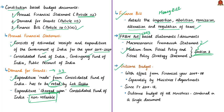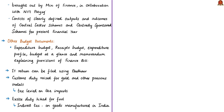Another important document presented before Parliament is the Outcome Budget. With effect from financial year 2007-08, performance and outcome budgets were presented to Parliament — previously done separately by ministries or departments until 2017. Since financial year 2017-18, the outcome budget of all ministries has been combined into a single document brought out by the Ministry of Finance in collaboration with the government think tank NITI Aayog. It consists of clearly defined outputs and outcomes of various central sector schemes and centrally sponsored schemes. One correction: PM Kisan is a central sector scheme — receiving 100% funding from the central government — not a centrally sponsored scheme as previously mentioned.